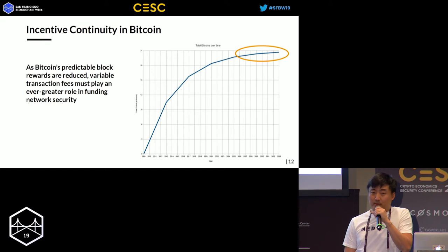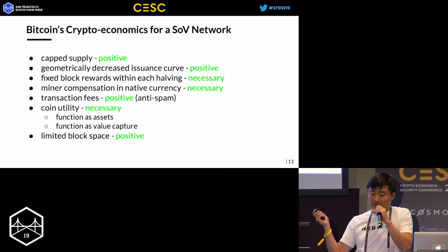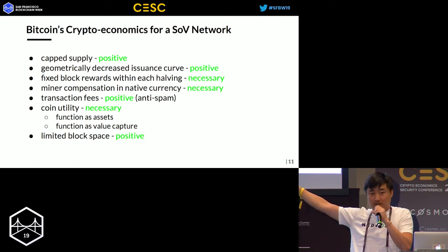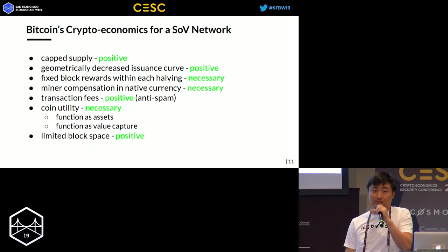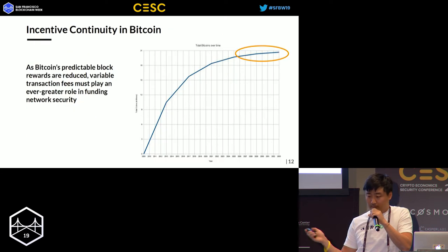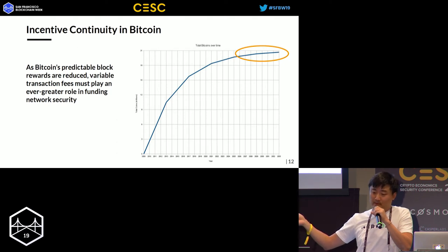Bitcoin does have an issue we call the continuity issue: there's an inflection point when issuance stops. When that happens, two necessary parameters — fixed block rewards and the security provisioning mechanism — will no longer apply. When Bitcoin issuance stops, security relies entirely on transaction fees rather than block rewards. This introduces tremendous risk for Bitcoin's SOV position. Bitcoin's crypto economic model is not perfect; there is a continuity issue.